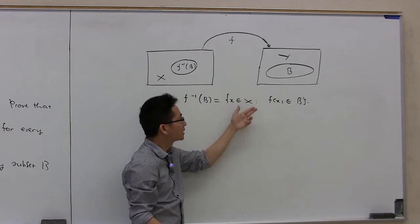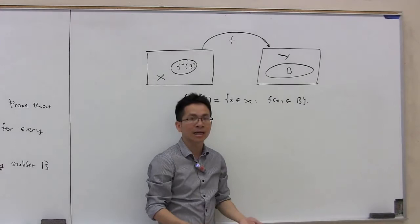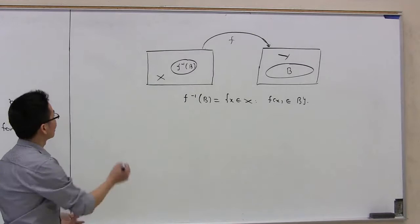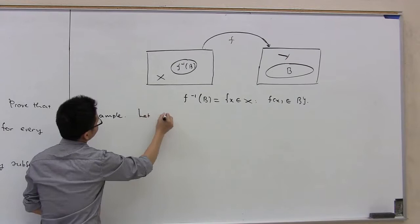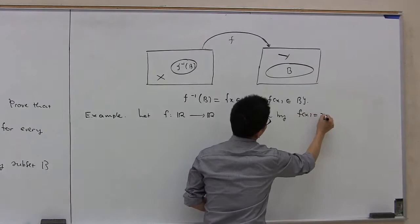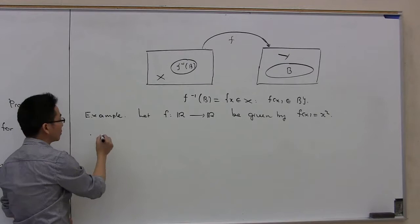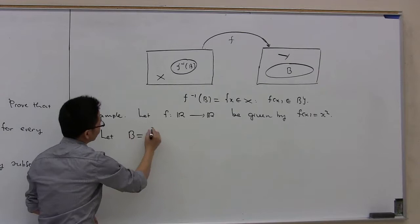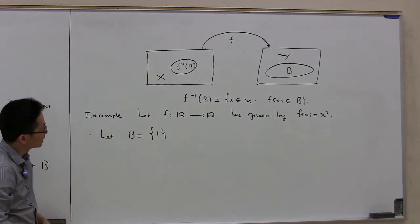To find f inverse of B, we find all possible inputs x such that f of x belongs to the set B. To better understand this concept, let's give an example using the squaring function. Let f be the squaring function and let B be the set consisting of only the number 1.